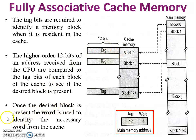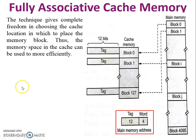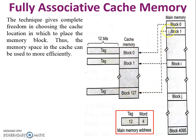Once the desired block is present, the word field is used to identify the necessary word from the cache memory. This technique gives complete freedom in choosing the cache location in which to place the memory block from main memory. Thus, the memory space in the cache can be used more efficiently compared to direct mapping. For example, if 127 blocks are empty, block 1 can be stored in block 127 — it is flexible.